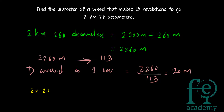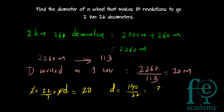We have 2 × (22/7) × r = 20 meters. Since 2r equals the diameter, we solve directly for diameter: diameter = 20 × 7 / 22 = 140/22 = 70/11, which equals 6 4/11 meters. The key concept — distance covered in one revolution equals circumference — is used to find the diameter.